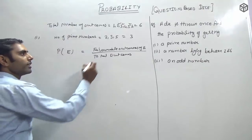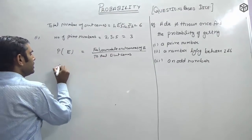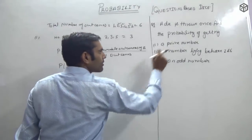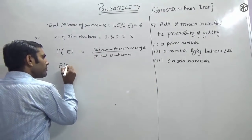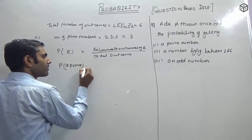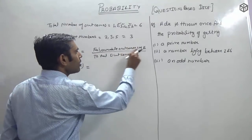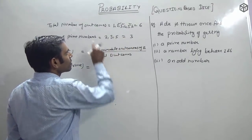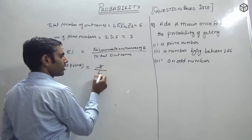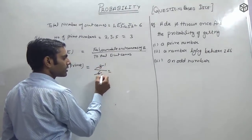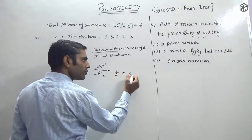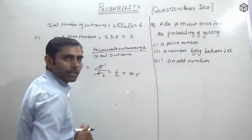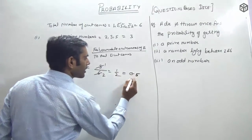Friends, I won't write this formula repeatedly. P(prime number): the event is getting a prime number. Favorable outcomes for prime numbers = 3, upon total outcomes = 6. Simplify: 3/6 = 1/2. If you want it in decimal, that is 0.5. So the answer is 0.5 — clear friends.